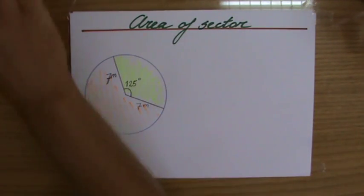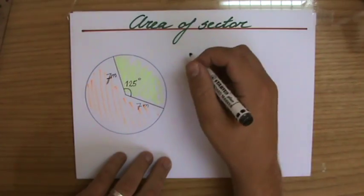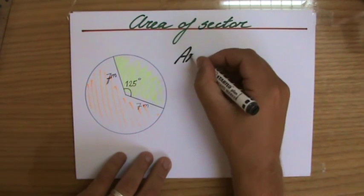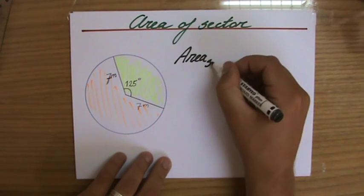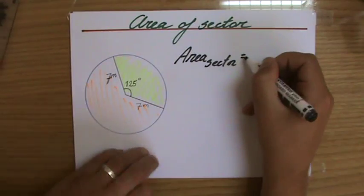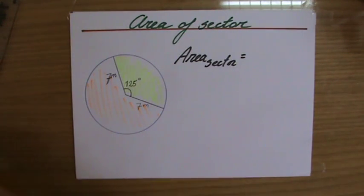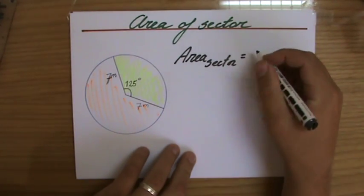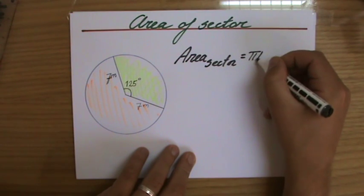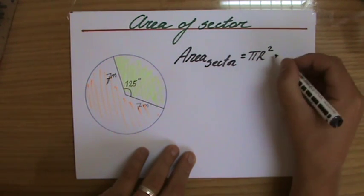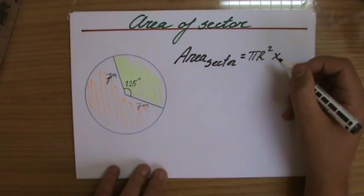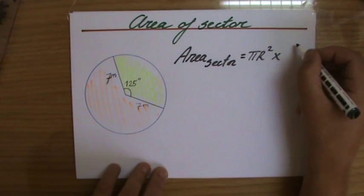Now how do I find that? What do I have to do? Well, the area of a sector equals the complete area of my circle. That's πr² times that fraction I'm interested in.